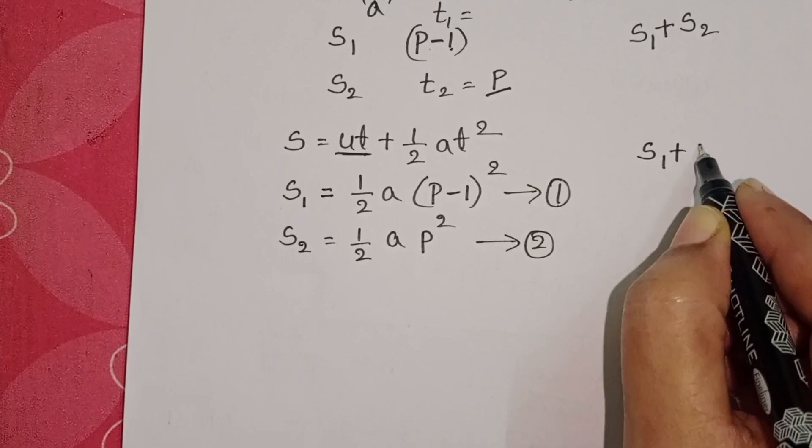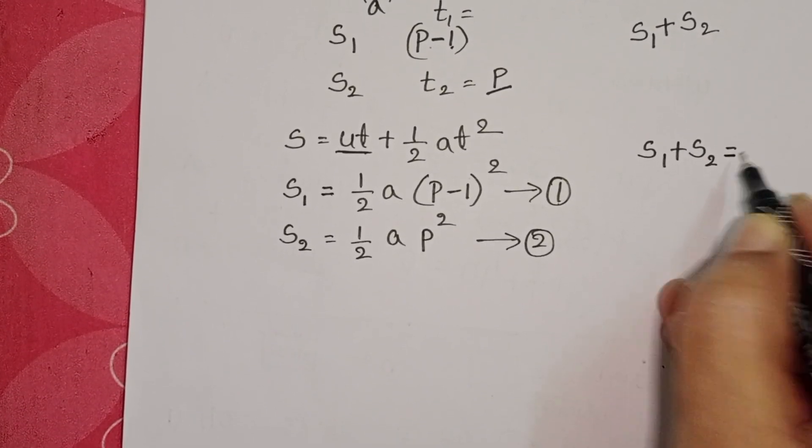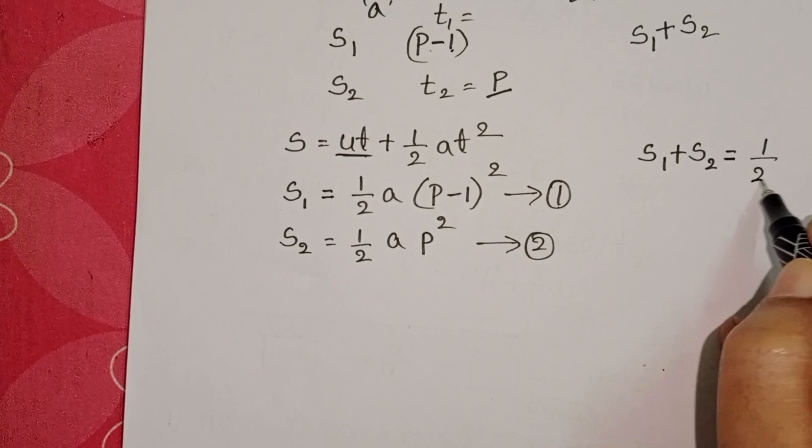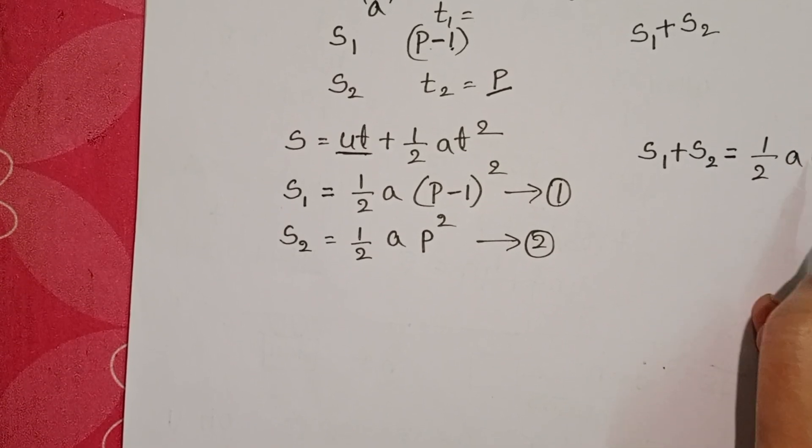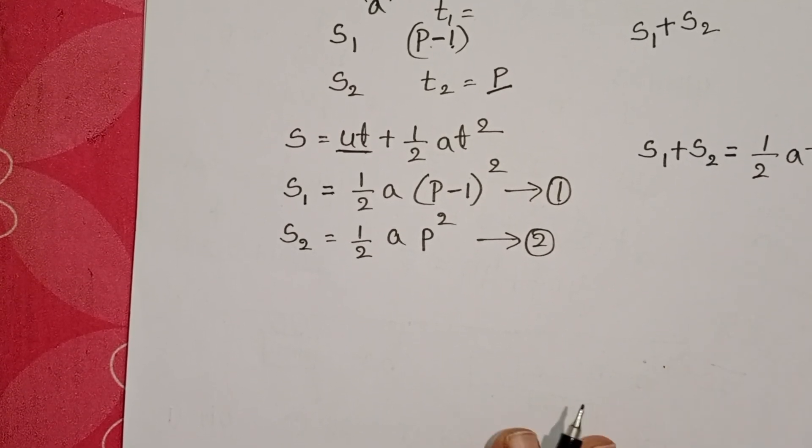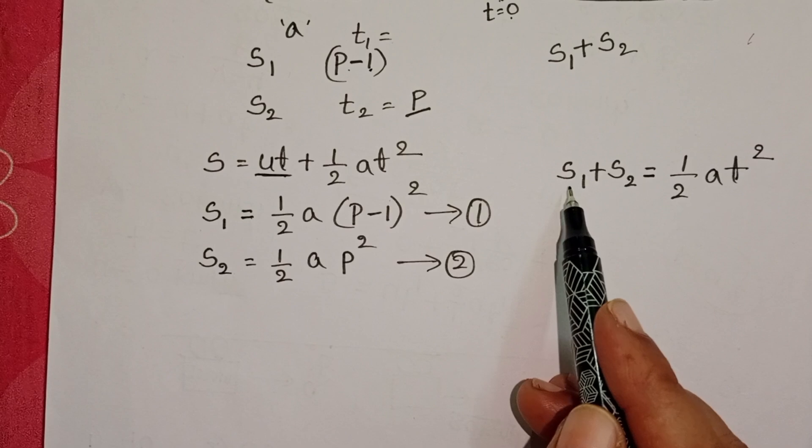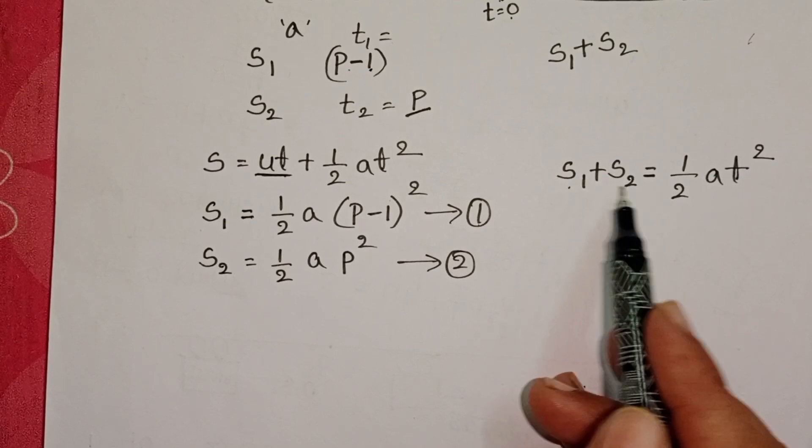Total distance S1 plus S2 equals half A times T square, where we don't know time, so let it be T. Now substitute S1 and S2 in this equation.